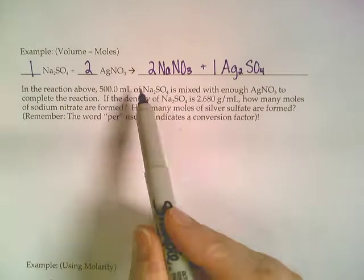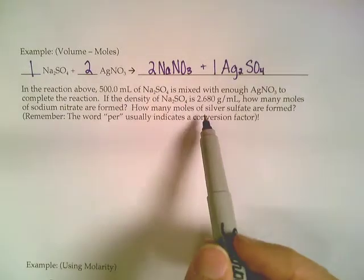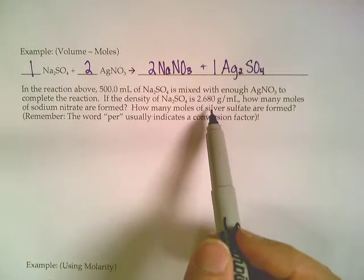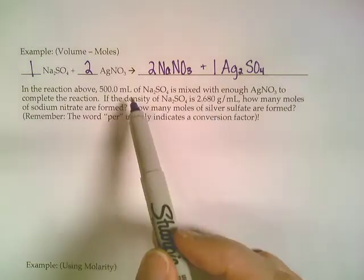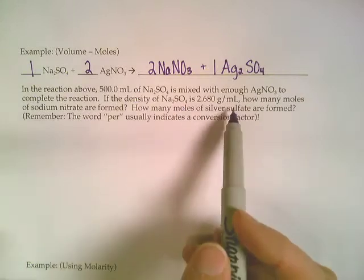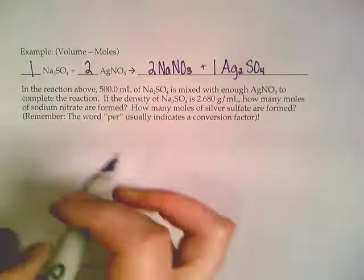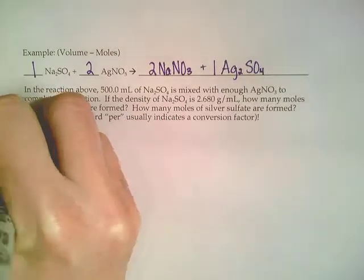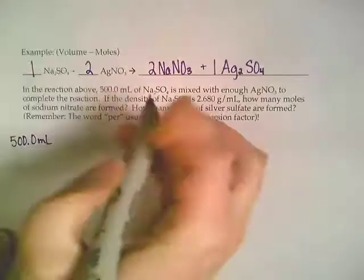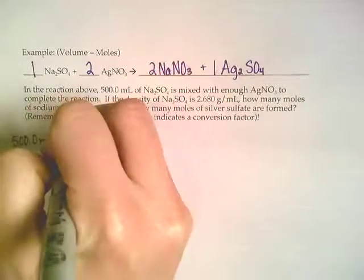Now when deciding which number should I start with, the 500 milliliters or this density here, you're always going to start with the simpler unit. So since this is just milliliters, and this is grams per milliliter, we're going to want to start with the 500 milliliters. It's just a little bit easier.